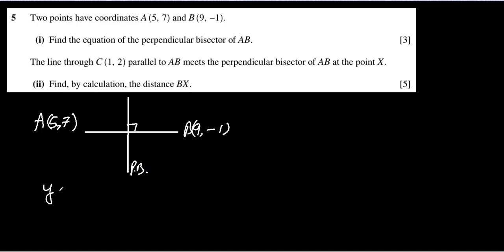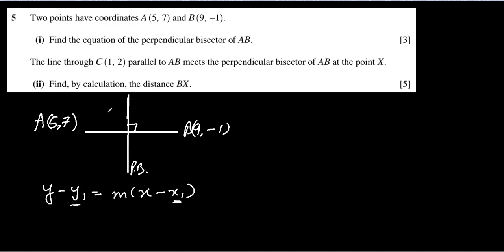For the equation we need y minus y1 equal to m times x minus x1. Now, y1 and x1 are the coordinates of the point on the line — this is the line we want. This point will be lying on the perpendicular bisector as well, and it is the midpoint of the existing line AB. So let's find the coordinates of the midpoint. Let's call it M.